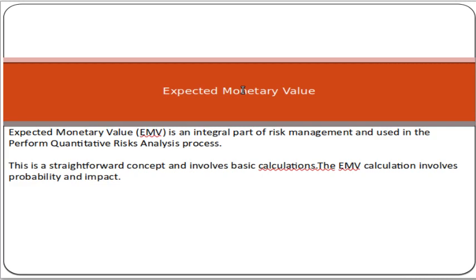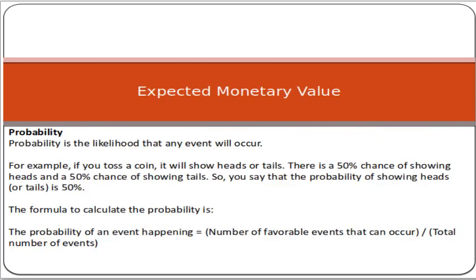Probability is the likelihood or chances that an event will occur — it is a concept from statistics. For example, if you toss a coin, it will show you head or tail. There is a 50% chance of showing head and a 50% chance of showing tail, because you have two options: either head or tail. So both have 50% chances.